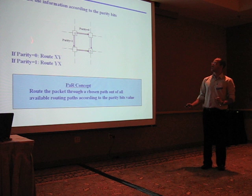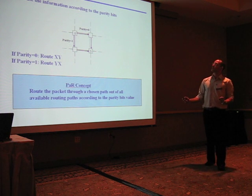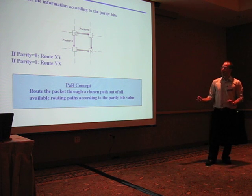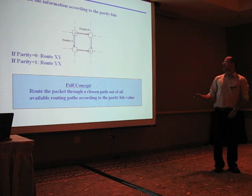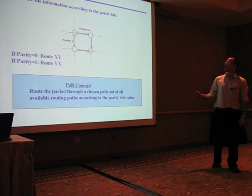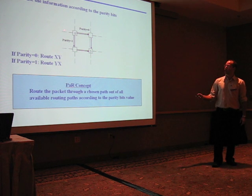We route the information according to the parity bit. Hence, if we have one parity bit, according to its value, we route the packet. If the parity bit, for example, is zero, we route the packet in XY.